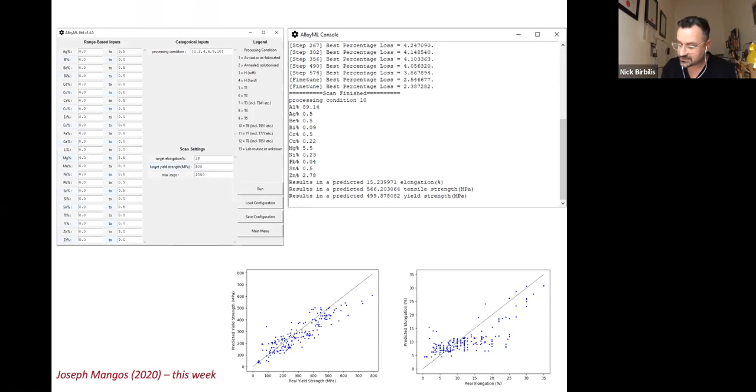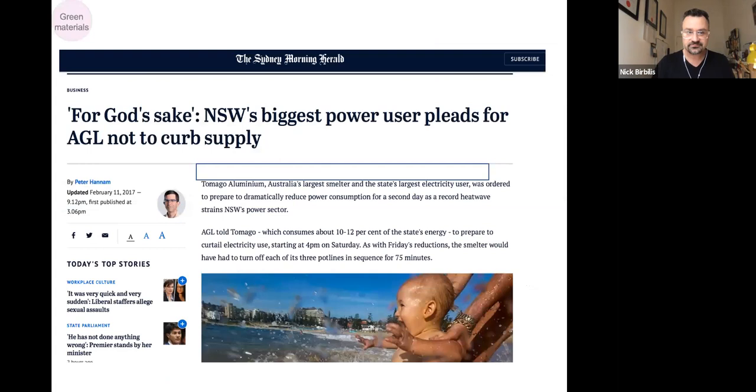All right, so that was recent up until a few months ago. Up until this week, there's another undergrad student at the ANU that's been working on turning this into a graphical user interface and a little bit of software that soon we'll be able to share with everyone, where you can use the software in two ways. You can either put in a composition and a temper and hit go, and it will tell you what your properties will probably be, or you can do it in reverse like you saw before. Now, the interesting thing is the model is getting better and better as it's matching the real data.